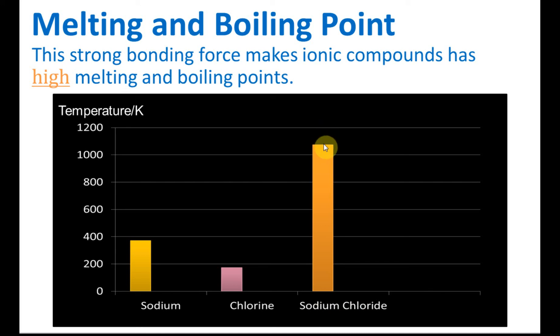So you can see the boiling point and melting point become very high when they form ionic compound. This is because the electrostatic force in between the ions are very strong. So we need a lot of heat energy to break this bond for it to melt or to boil.